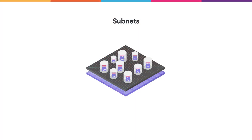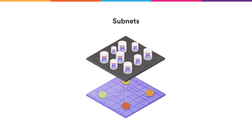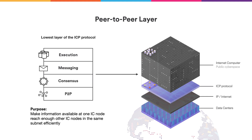Each subnet is a set of nodes — computers that communicate with each other over the Internet. The Internet Computer runs on the Internet Computer Protocol, which has four major layers: Execution manages a safe environment for deterministic execution of software; Message Routing routes valid messages through destinations; Consensus arranges messages into blocks and validates them; and the peer-to-peer layer makes information available at one IC node reach enough other IC nodes in the same subnet efficiently.